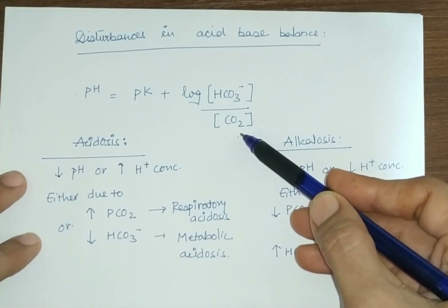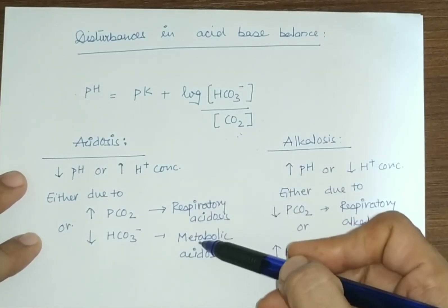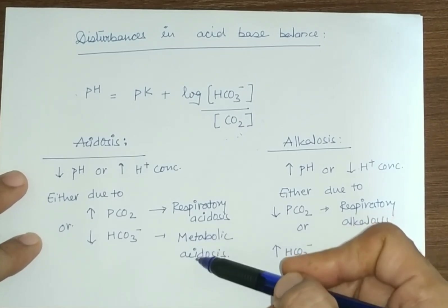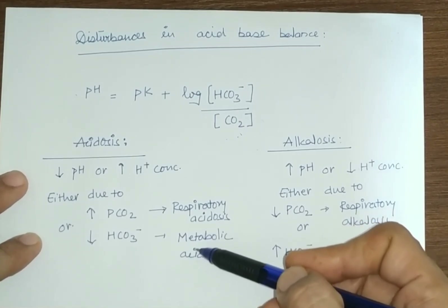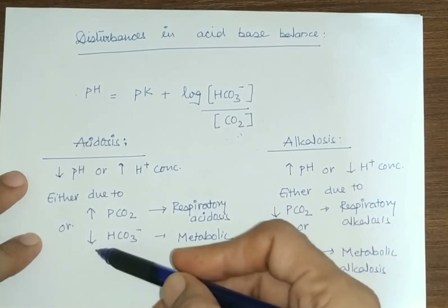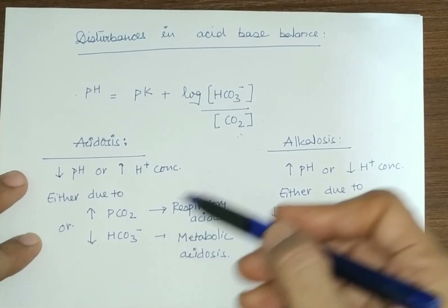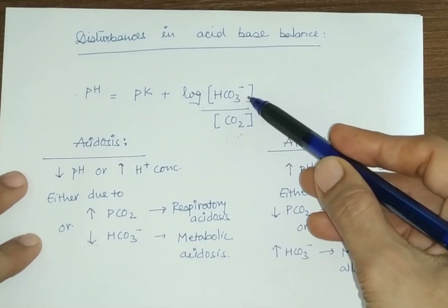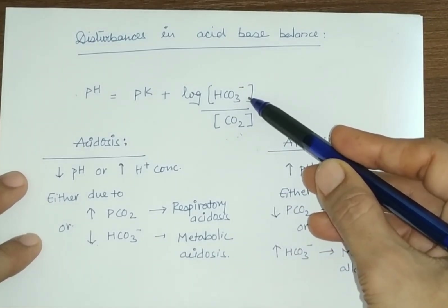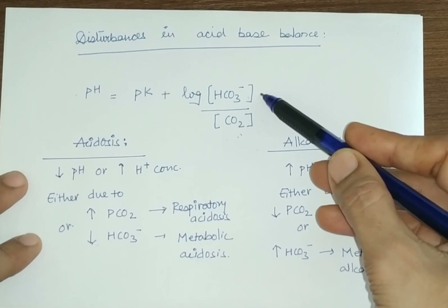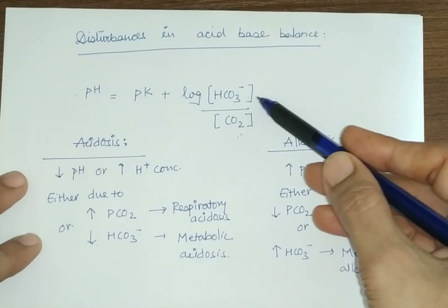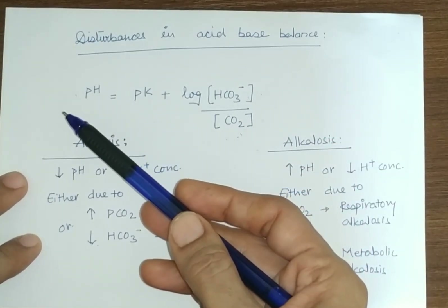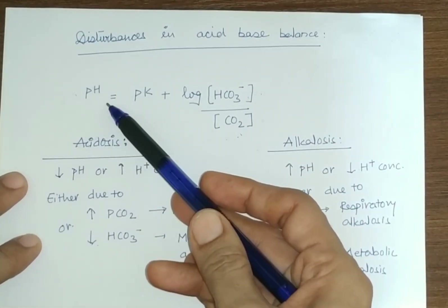Next is metabolic acidosis. Metabolic acidosis is due to a decrease in bicarbonate ion concentration. When HCO3⁻ concentration decreases, pH also decreases.